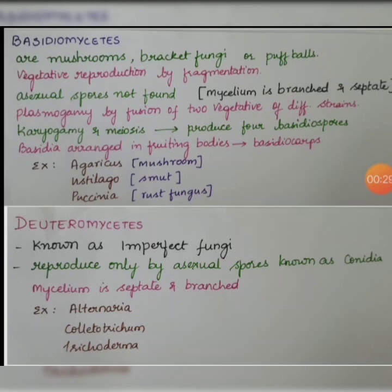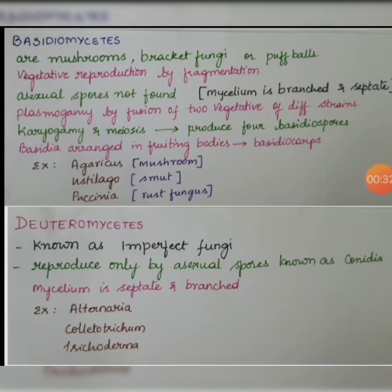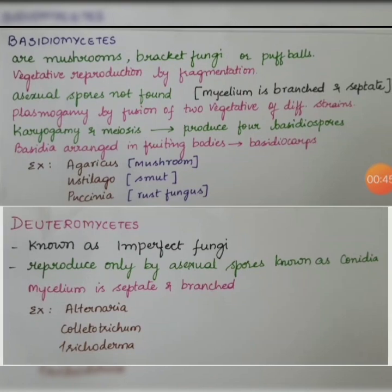The basidiocarps are basidia arranged in fruiting bodies. Examples are Agaricus, Ustilago and Puccinia. Deuteromycetes are called imperfect fungi. They reproduce only through asexual spores called conidia, and their mycelium is septate and branched. Examples are Alternaria, Trichoderma and Colletotrichum.